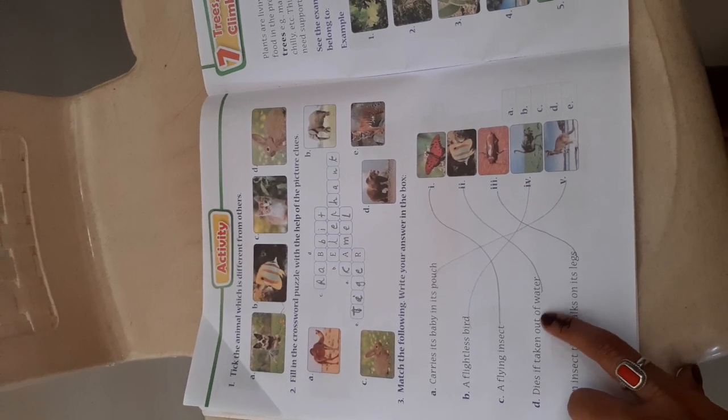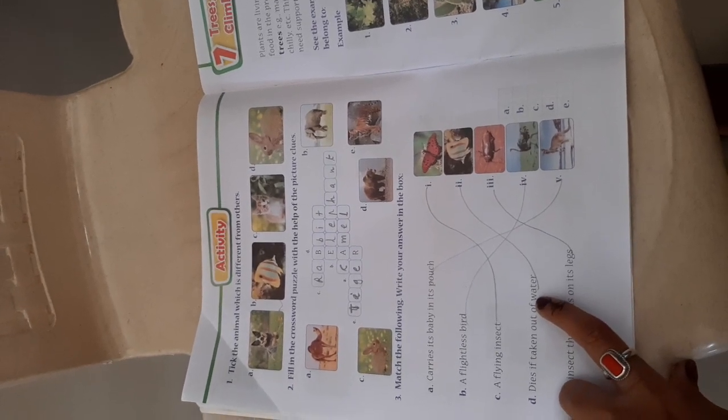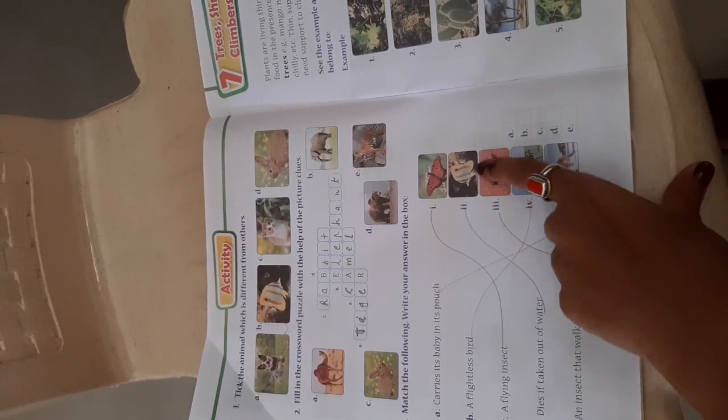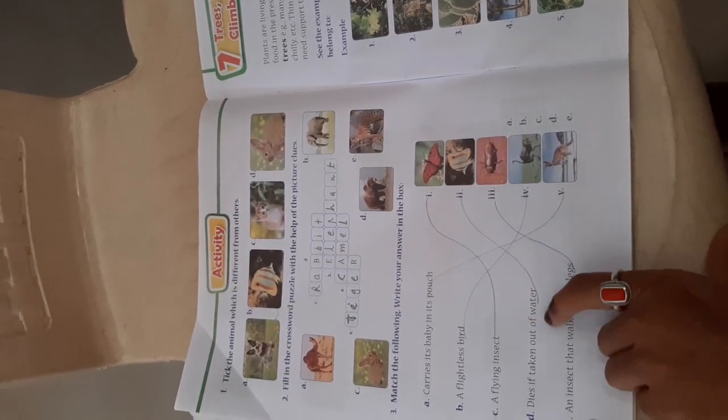Dies if taken out of water - which animal dies if taken out of water? It is fish. So you have to write D, number 2.